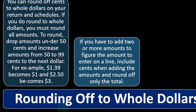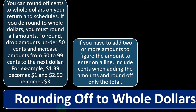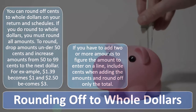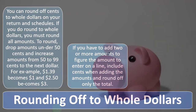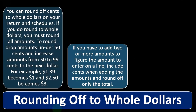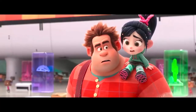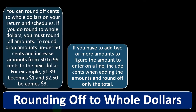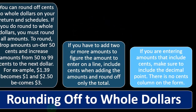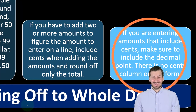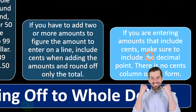For example, if you started adding up the dollars without the pennies versus adding the pennies and then rounding after you come to the total, it's probably going to be a fairly insignificant dollar amount of rounding difference. You can typically round after you add them up with the pennies. If you are entering amounts that include cents, make sure to include the decimal point.